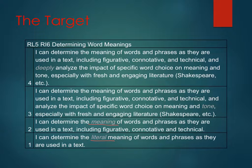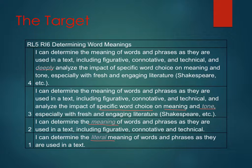At the proficient level for your grade level, not only can you determine the meaning of words and phrases as they are used in a text — including figurative, connotative, and technical — you can also analyze the impact of specific word choice on meaning, which you've already done, and tone — the emotion or mood of the piece — especially with fresh and engaging literature, which is pretty much everything we're reading this year. At the four level, the only difference is that you can deeply analyze the impact of specific word choice.